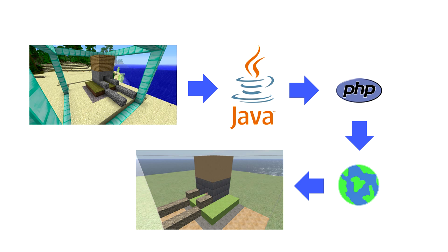In the ideal setup I'll be using, I have a multiplayer Minecraft server running on the same machine as a web server. A small PHP script will run the Java program and update the block data. The OpenSim script will access this web address every 20 seconds or so to get the block data and make a pretty much live recreation of that part of the Minecraft world in OpenSim.